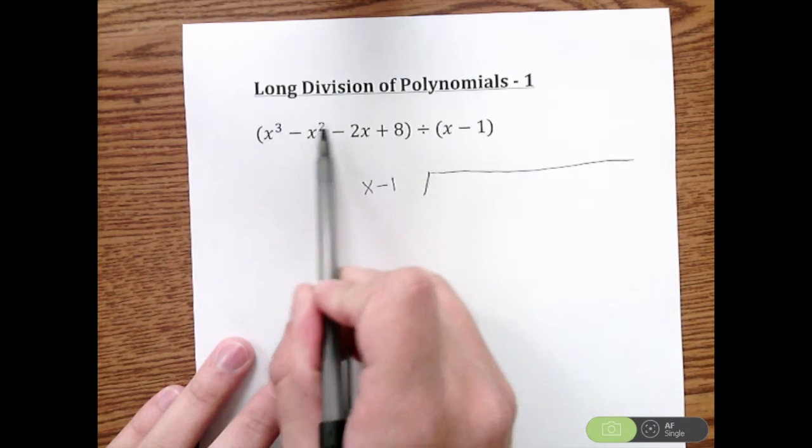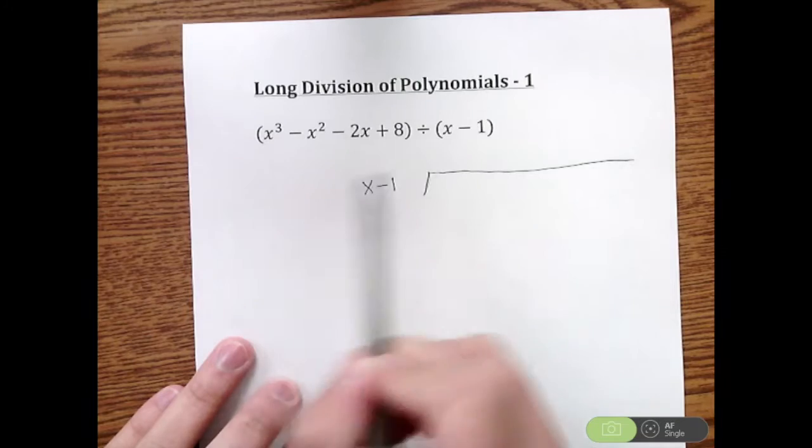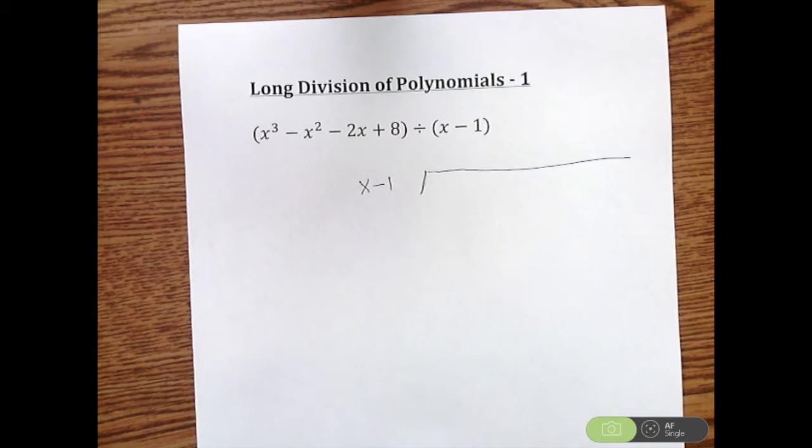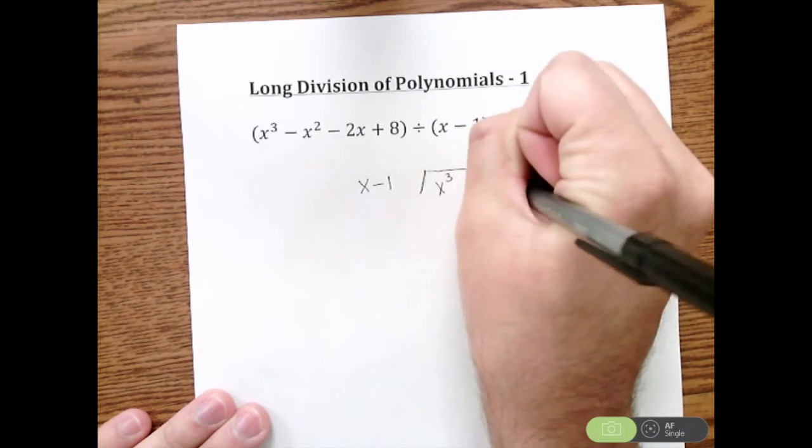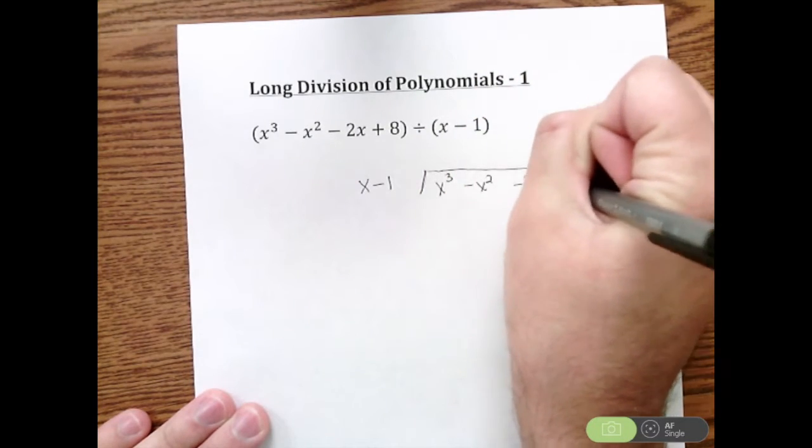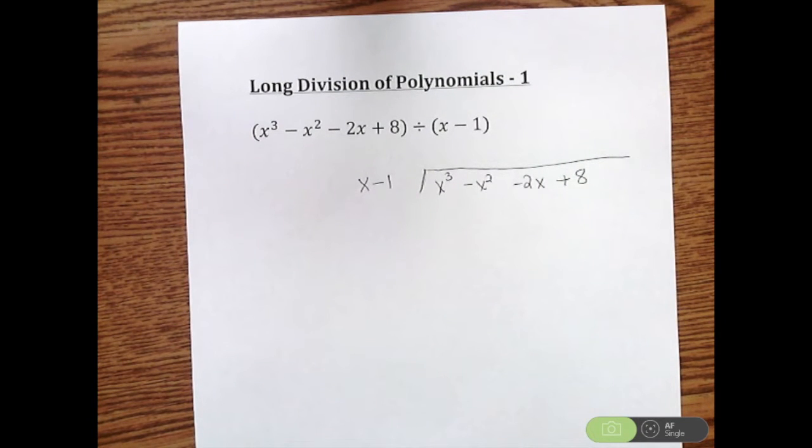say I didn't have an X squared here, I would put plus zero X squared. That's all going to become important, especially on the second problem I do. So I have X cubed minus X squared minus 2X plus 8. Now long division of polynomials, it's not difficult, it just will take some time. There's a lot of ways you can mess up.